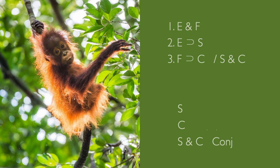But a new question arises: where would the s and c come from? Probably up here in lines 2 and 3. But to break out that c from line 3, we would need an f for modus ponens. And to free up that s from line 2, we would need e for modus ponens. So let's put that in too.